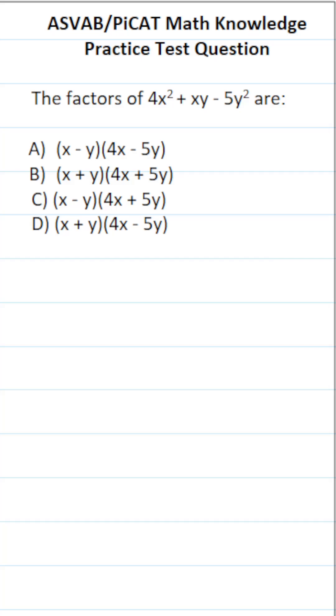This math knowledge practice test question for the ASVAB and PiCAT says, the factors of 4x squared plus xy minus 5y squared are. So we're being asked to factor 4x squared plus xy minus 5y squared.